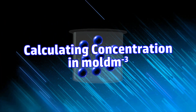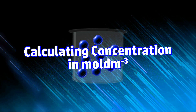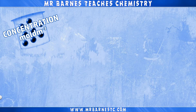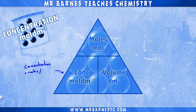Hi guys, welcome to this video looking at how to calculate the concentration in moles per decimetre cubed. To calculate the concentration in moles per decimetre cubed you need to remember this triangle. It shows you that the concentration in moles per decimetre cubed is the moles, with the unit mol, divided by the volume in decimetres cubed.